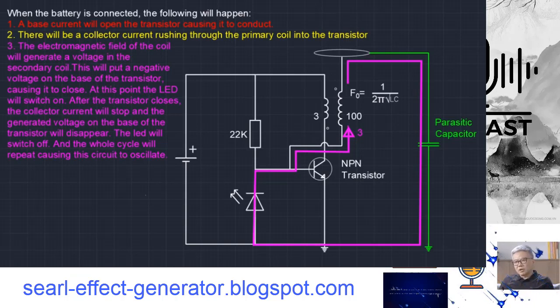The solid-state Tesla coil, often associated with the Slayer Exciter circuit, represents an exciting foray into the world of electronics. Instead of relying on traditional spark gaps, this technology incorporates electronic components such as LED diodes and MOSFETs, offering a modern twist on a classic invention.